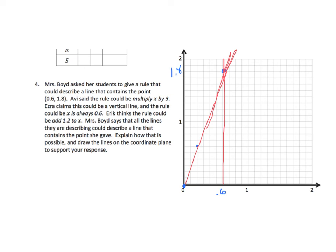If I added 1 and 2/10 to x, so whatever x is, we add 1 and 2/10. So I'm going to start with 0, add 1 and 2/10, and I'm going to end up right here. And again, we'd have a line that goes right through there. So all three of these rules could potentially explain the presence of the point 6/10 and 1 and 8/10.